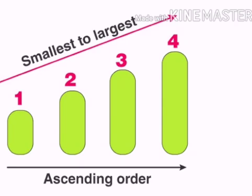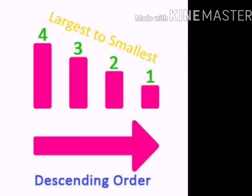Ascending numbers, as you know, are arranged from small to big and descending numbers are written from big to small.